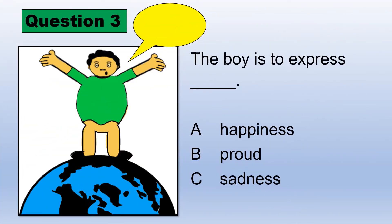Question 3. I am on top of the world. The boy is to express... A, happiness. B, proud. C, sadness.